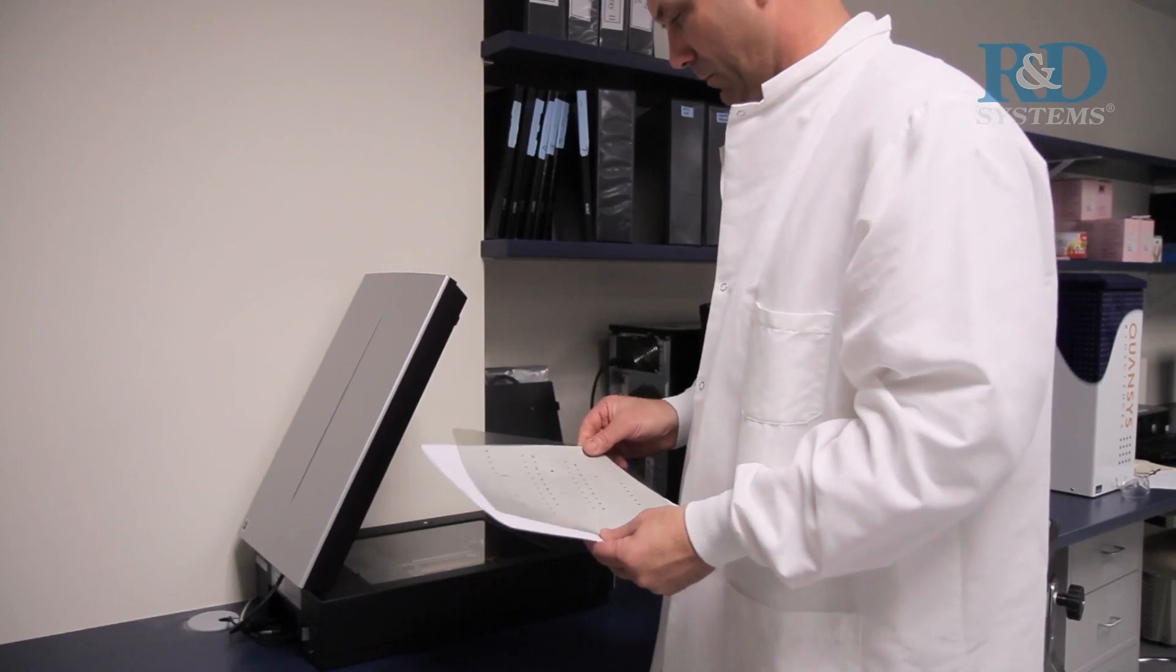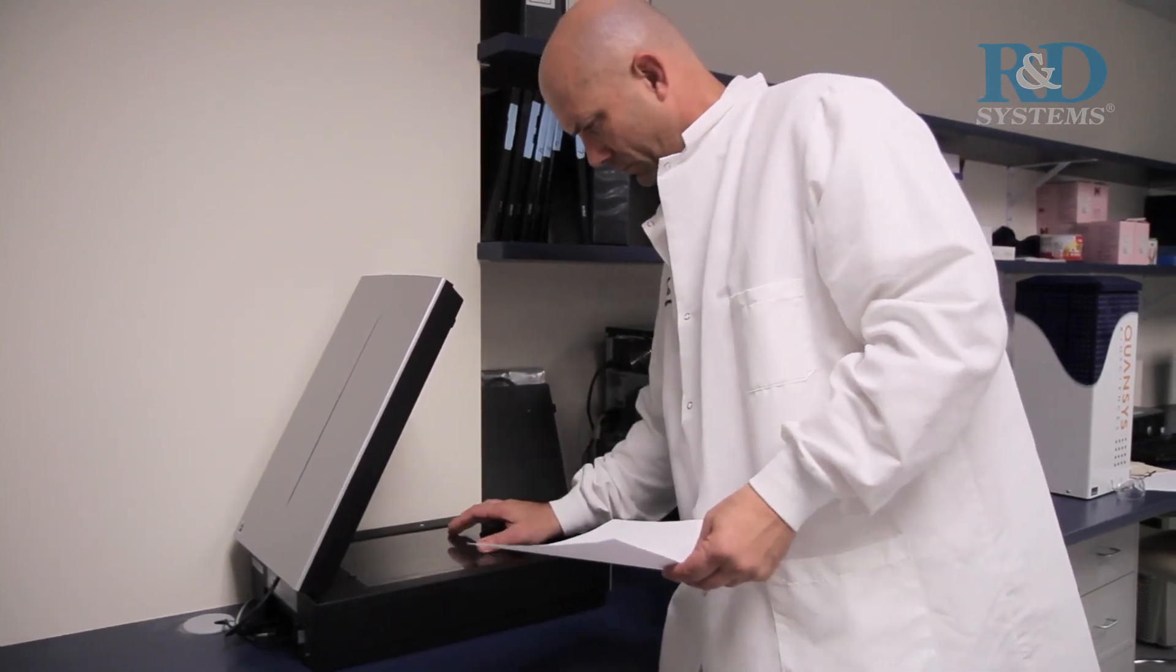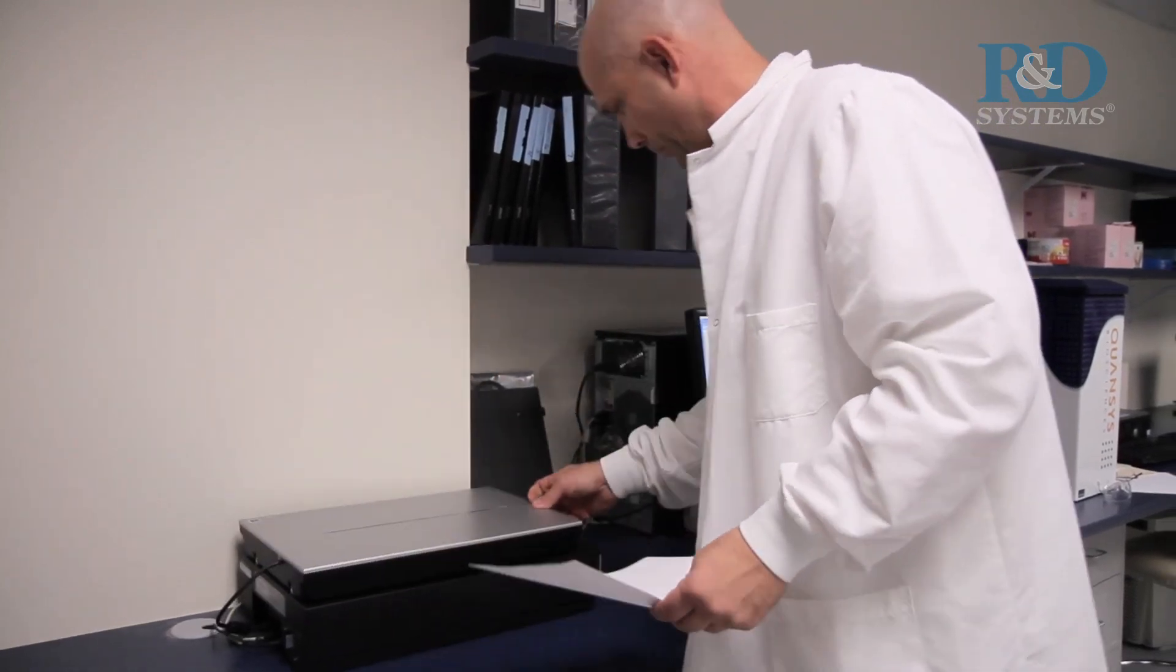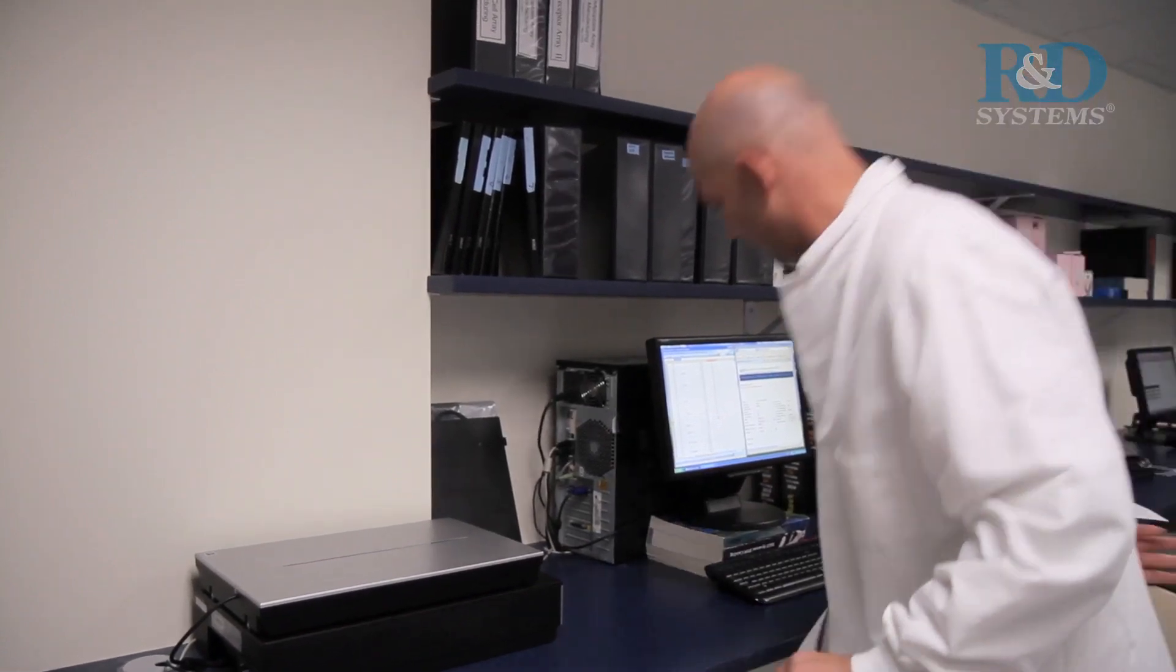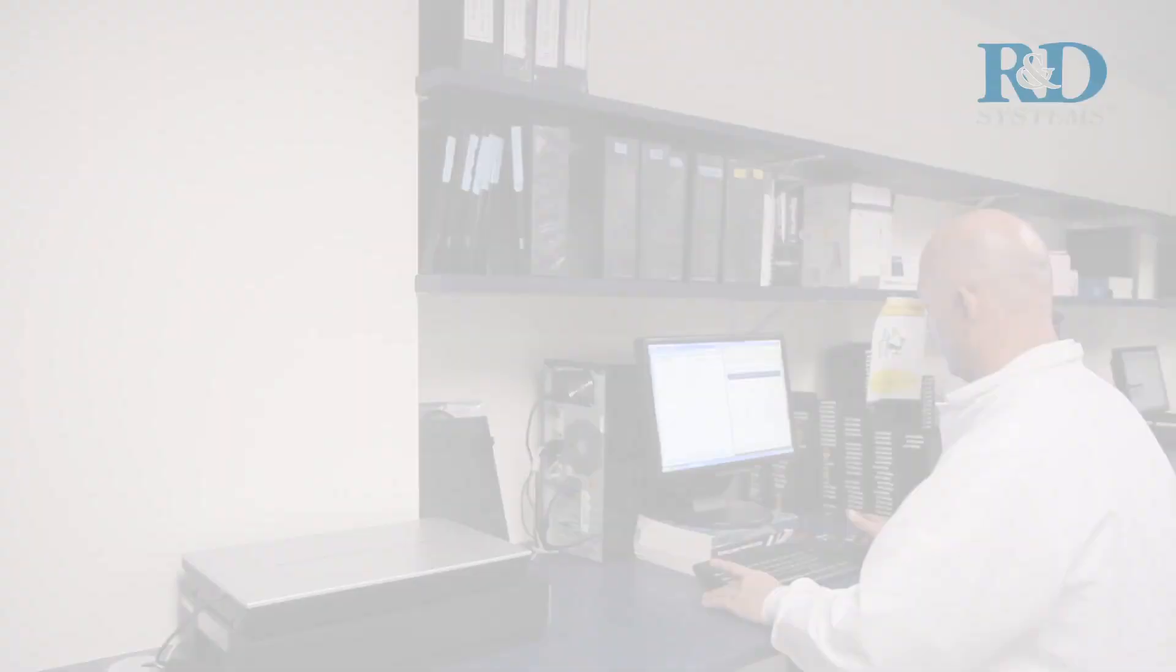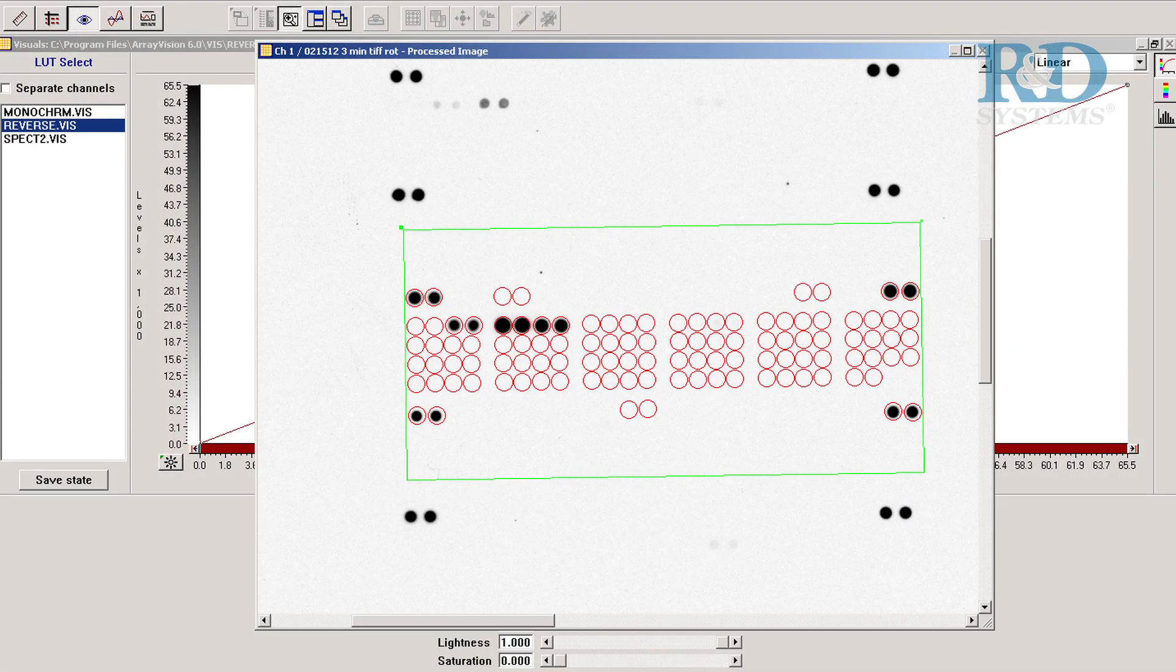Pixel densities on developed film can be collected using a transmission mode scanner such as the Epson Perfection V750 Pro. Create a template to analyze pixel density in each spot of the array using an appropriate imaging analysis software program.